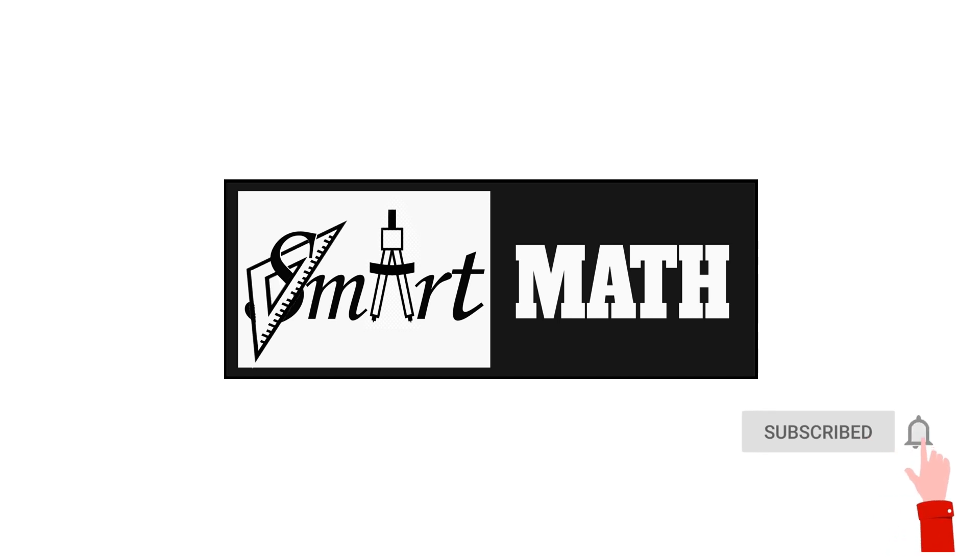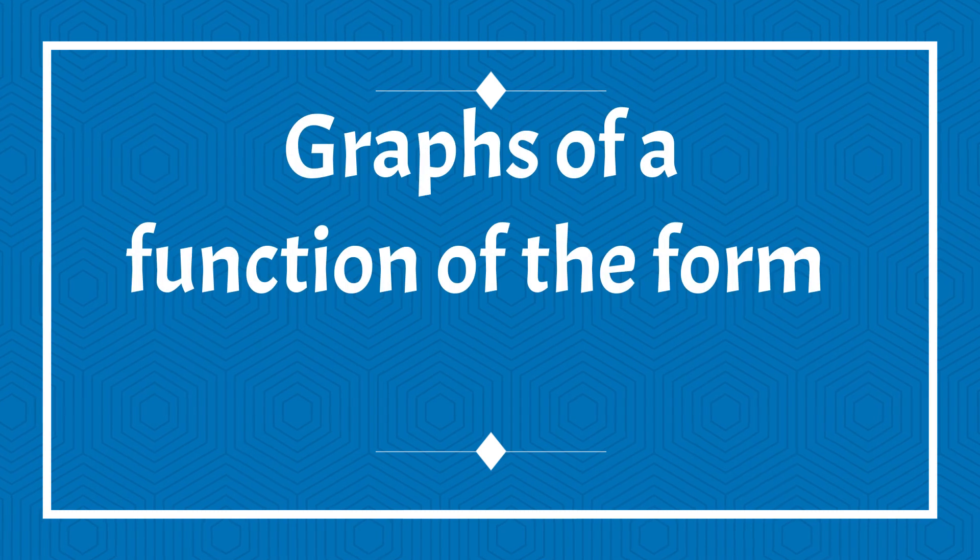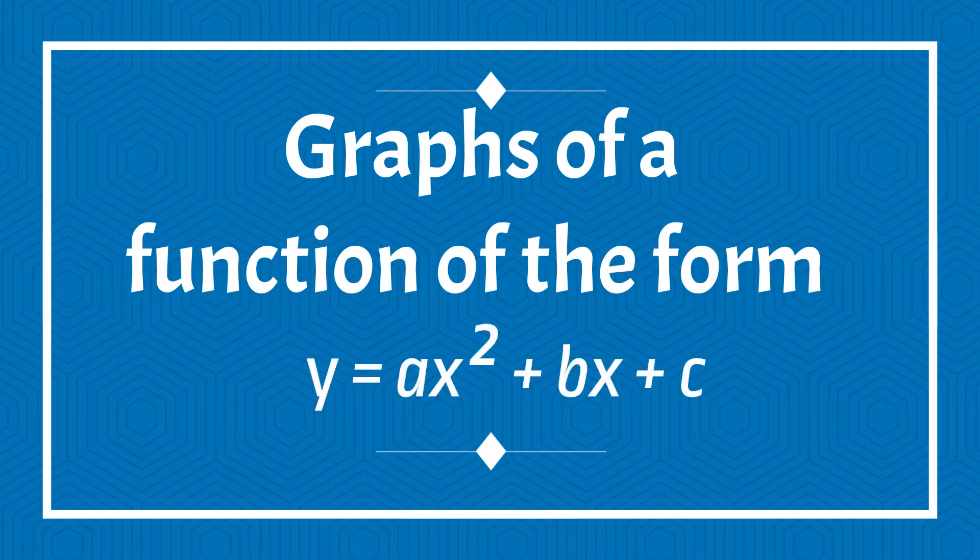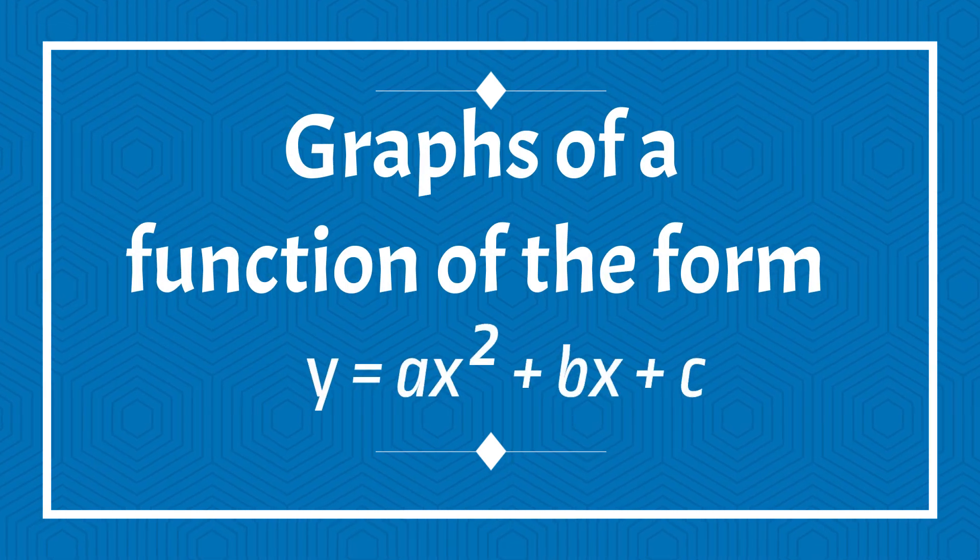Hi everyone, welcome to Smart Math Online Tutor. Through this video we are going to look into the graphs of the form y equals ax squared plus bx plus c. First let's see what if a is greater than zero. Look at this example: y equals x squared minus 2x minus 3, where the range of x is given as x is greater than or equal to minus 2 and less than or equal to 4.